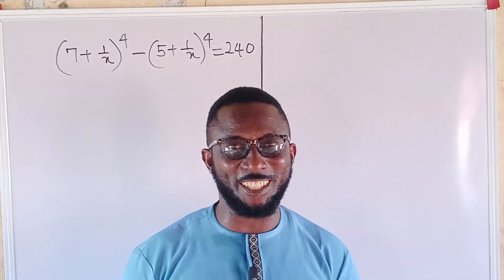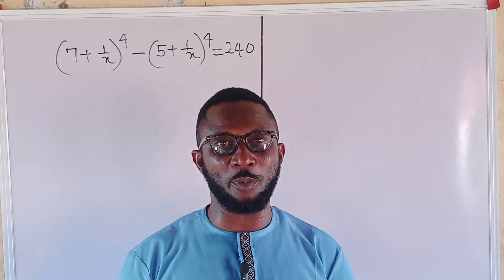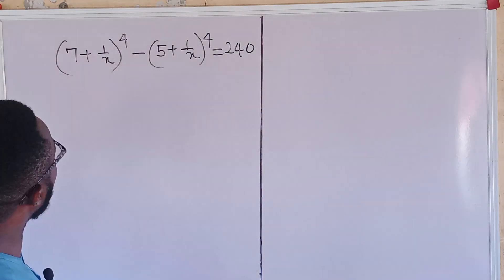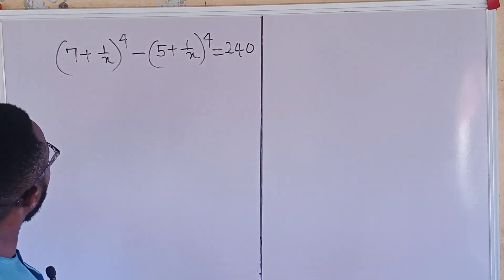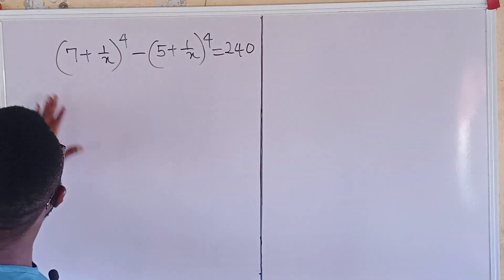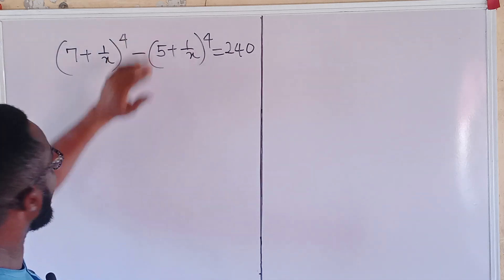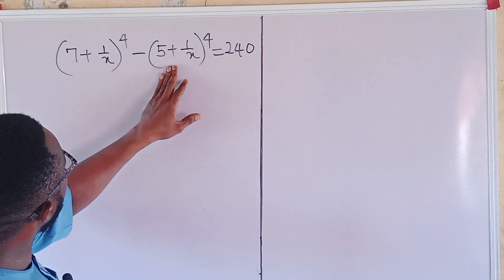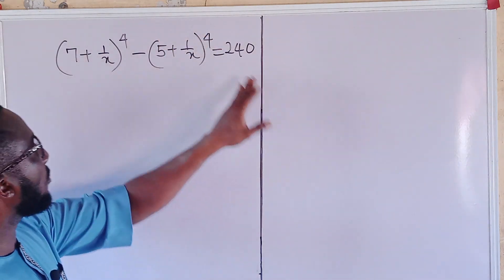Hello guys, welcome once again to another interesting math video. Let's quickly provide a lasting solution to the problem on the board. I have this quartic polynomial from Harvard University entrance exam — a very interesting and straightforward problem. The equation is: (7 + 1/x)^4 minus (5 + 1/x)^4 equals 240.